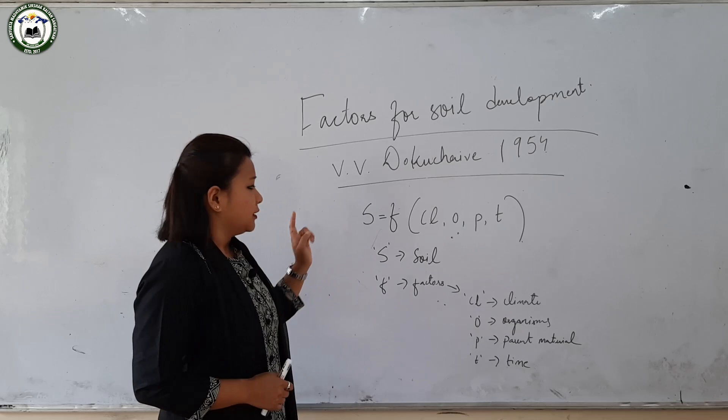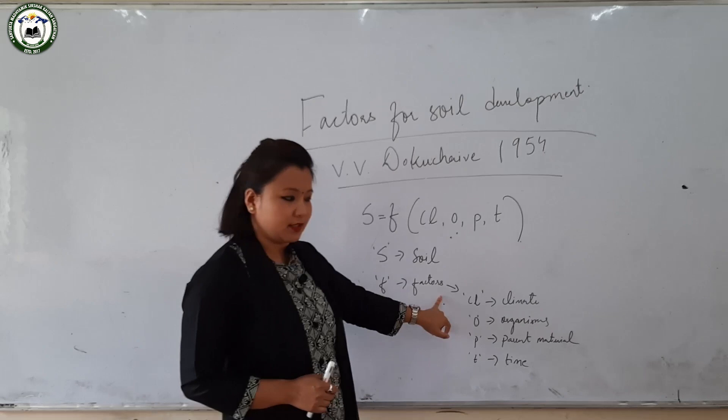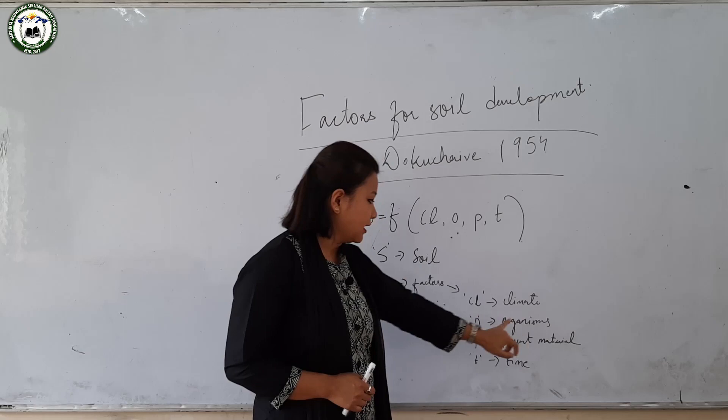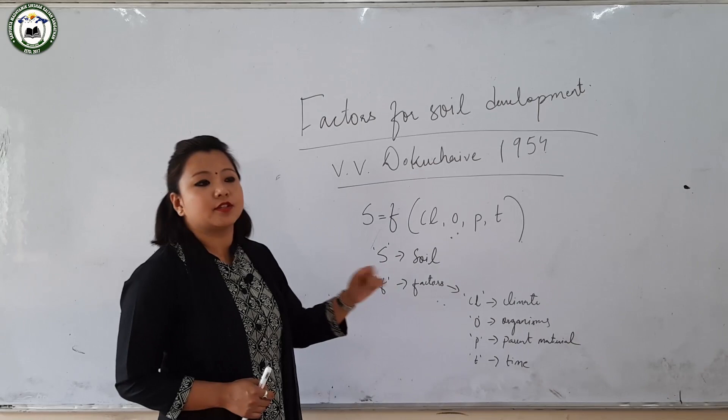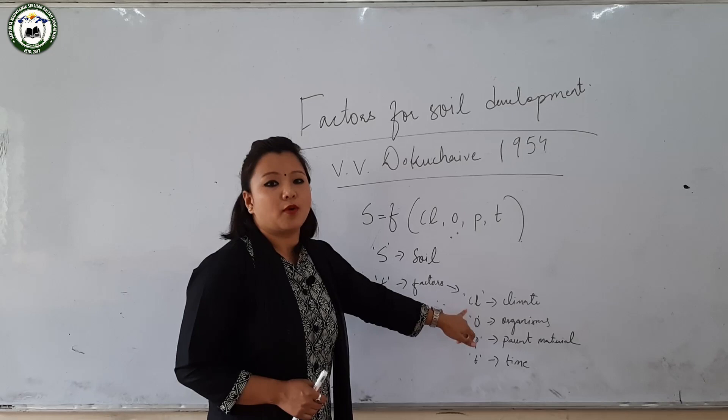In this equation, Cl refers to climate, O refers to organisms, P refers to parent material, and T refers to time. All these major factors are responsible for soil development. Now I am going to describe each factor one by one.